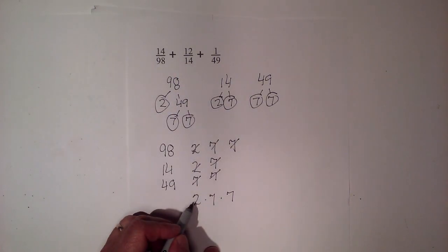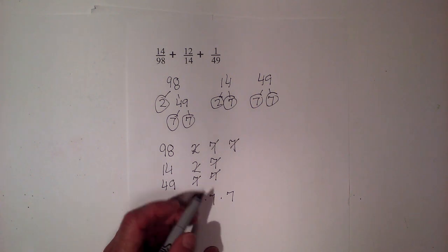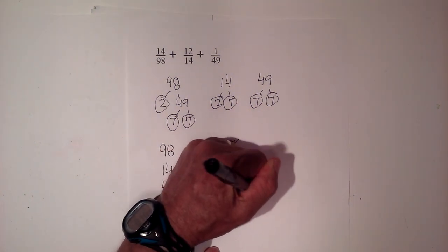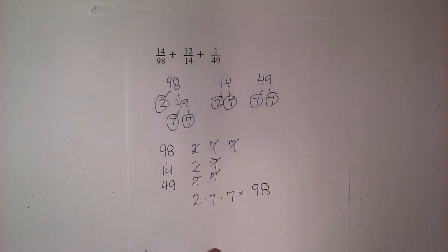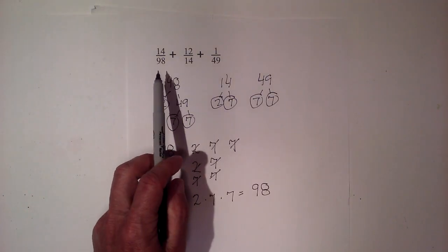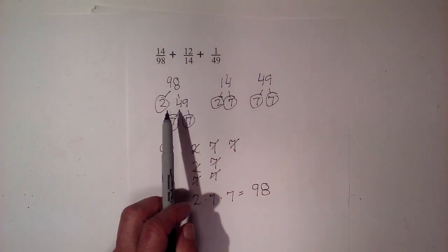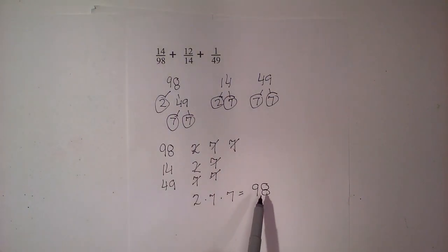And if you multiply 2 times 7 is 14. 14 times 7 is 98. So you can see how simple it was. By trial and error, this would be a little more challenging. But you can discover that the lowest common denominator is 98. It works for all numbers.